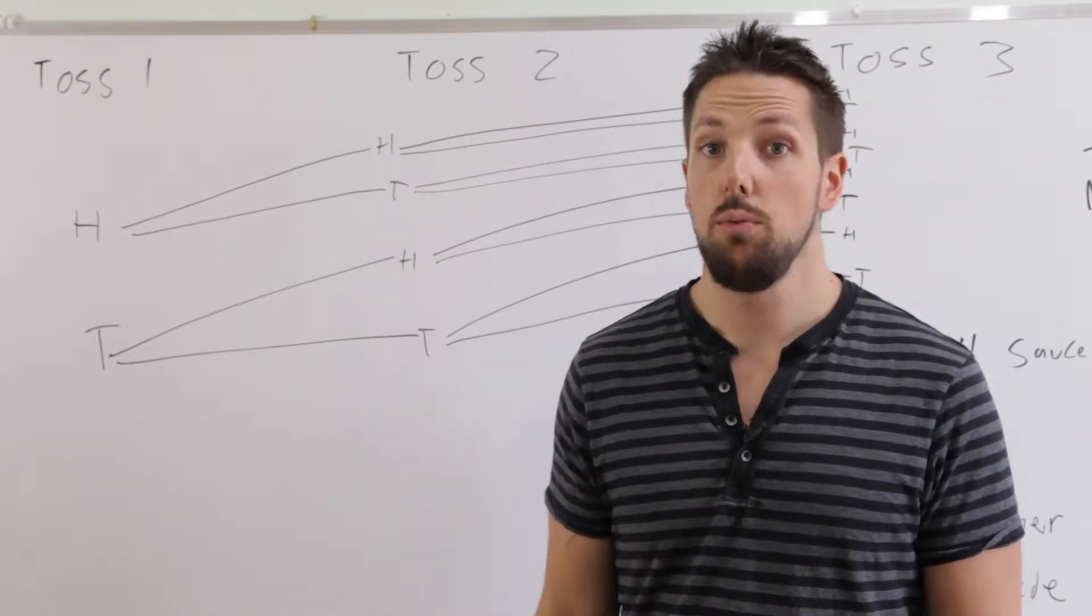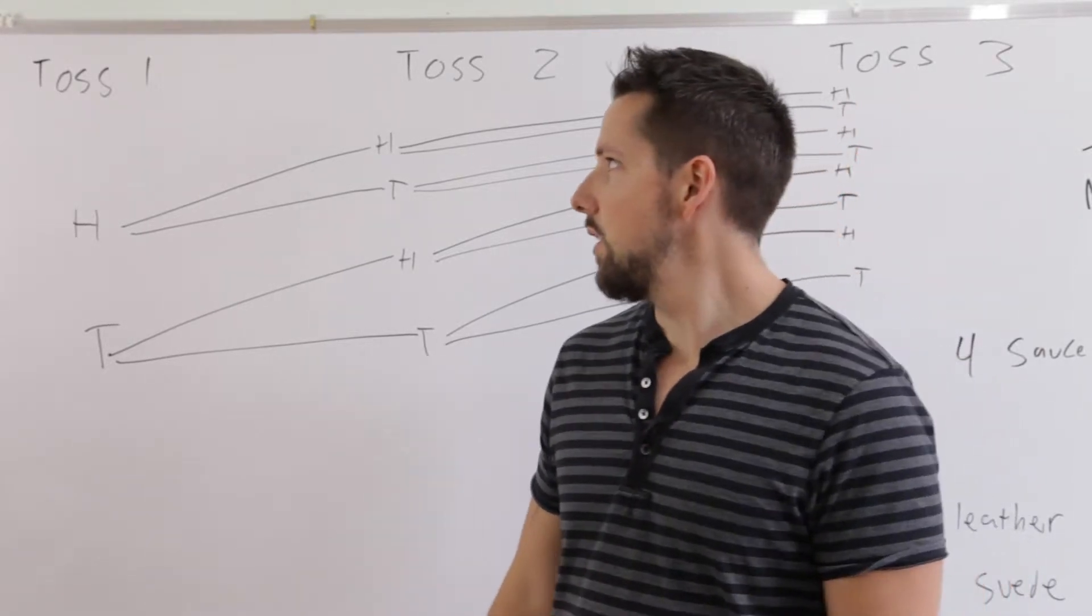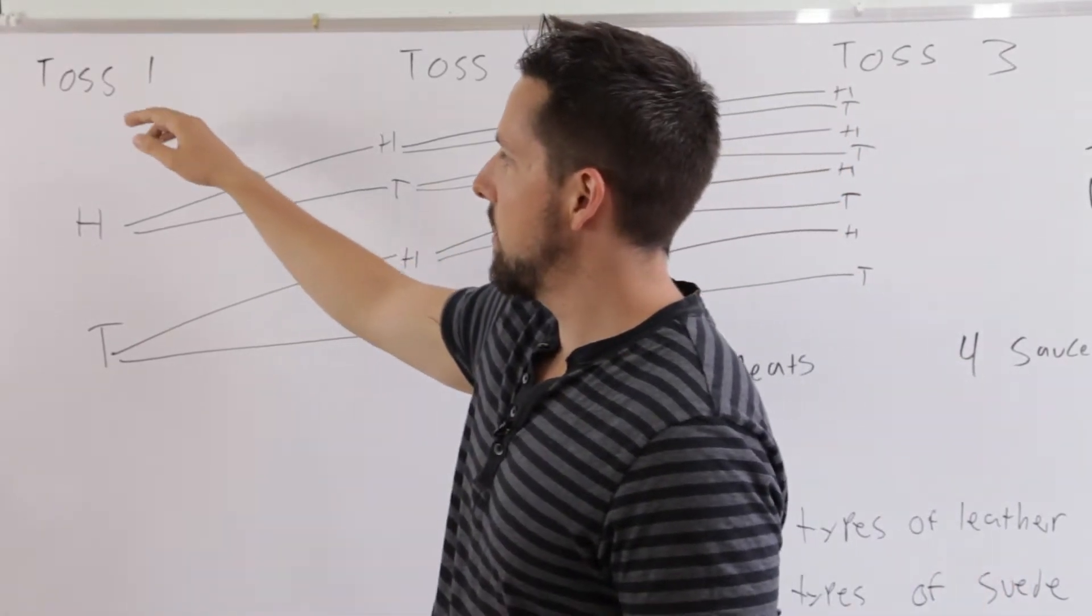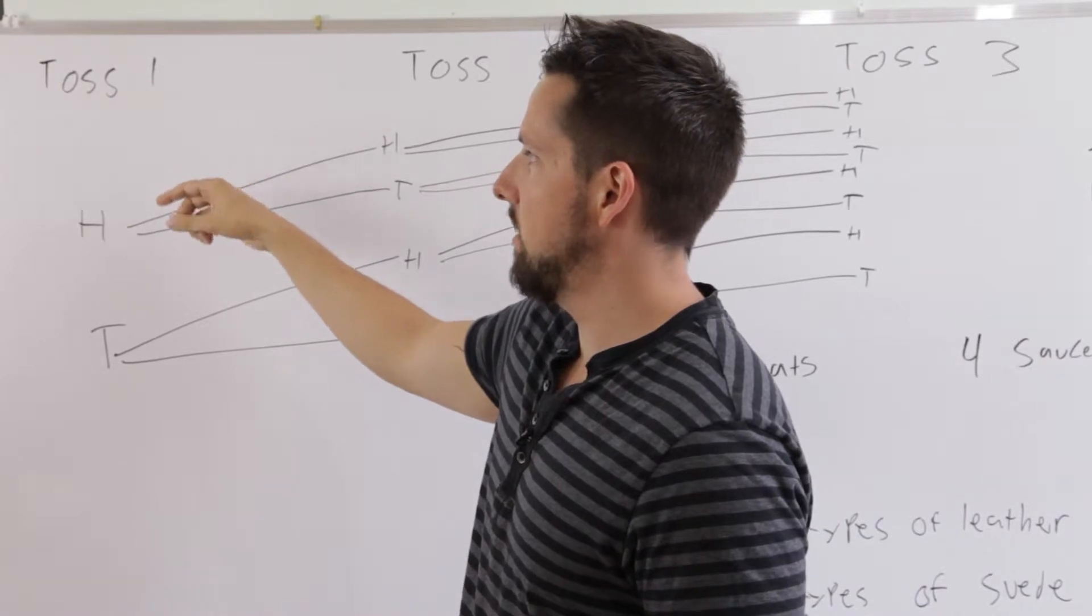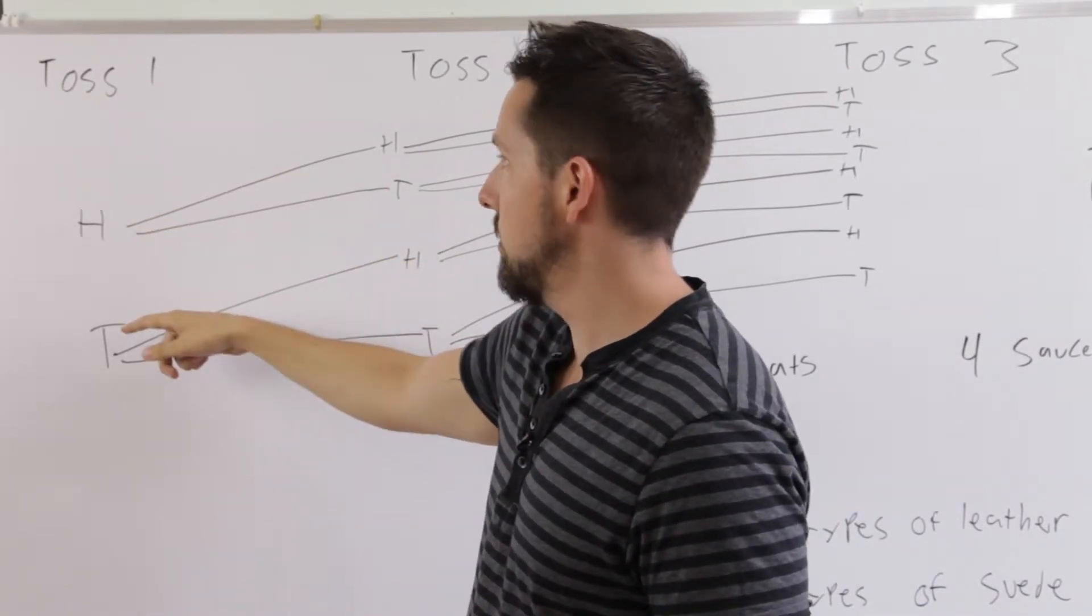Well, the way to answer this, one of the ways to answer this, is using a tree diagram. So a tree diagram, you start with the different stages of your events. So the first toss has only two outcomes, a heads or a tails.